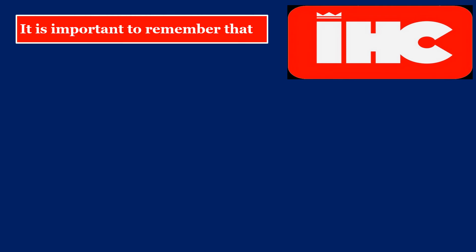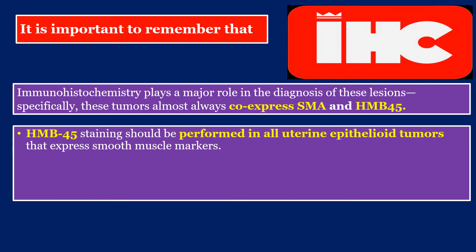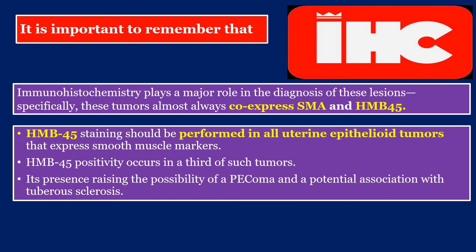It is important to remember that immunohistochemistry plays a major role in the diagnosis of these lesions. Specifically, these tumors almost always co-express SMA and HMB-45. HMB-45 staining should be performed in all uterine epithelioid tumors that express smooth muscle markers. HMB-45 positivity occurs in a third of such tumors, its presence raising the possibility of a PEComa and a potential association with tuberous sclerosis.